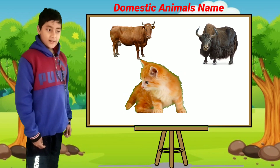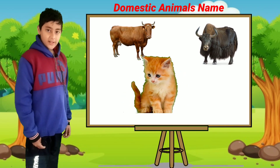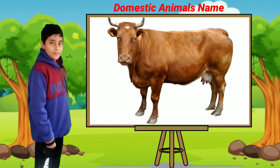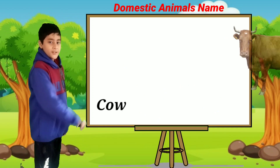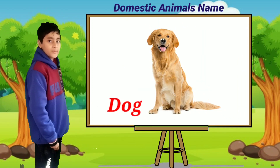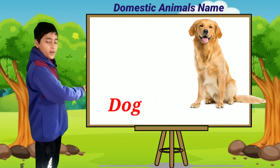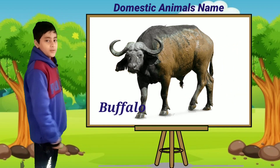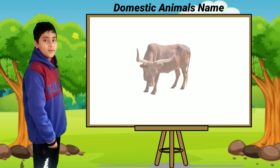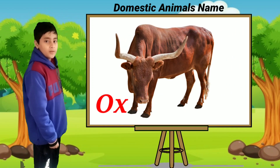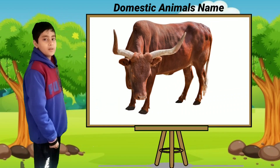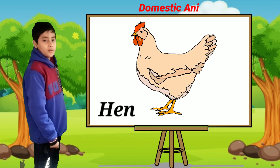Let's learn domestic animals names. This is a cow. This is a dog. This is a buffalo. This is a fox. This is a horse. This is a hen.